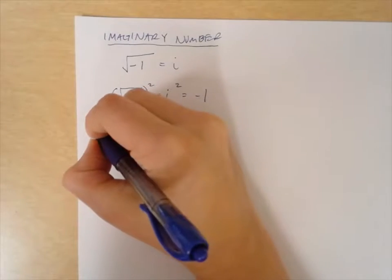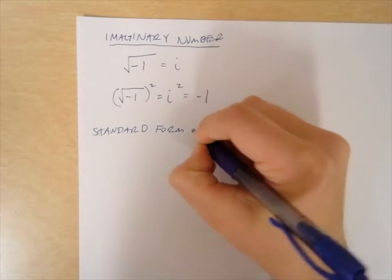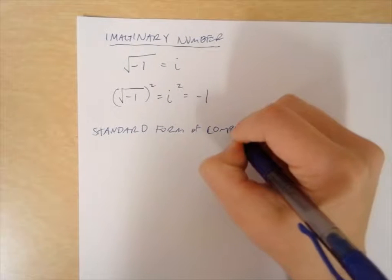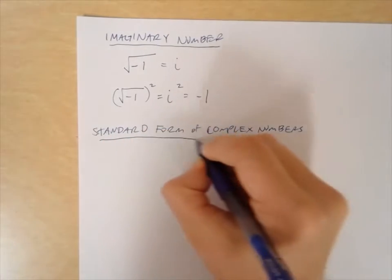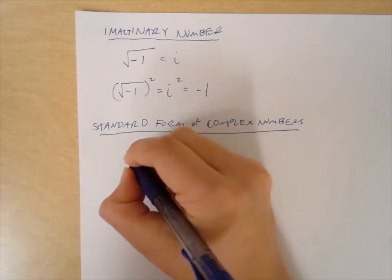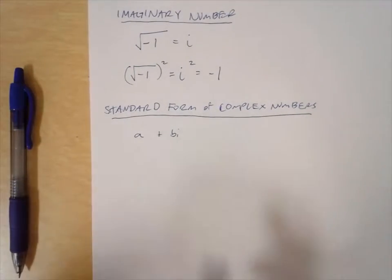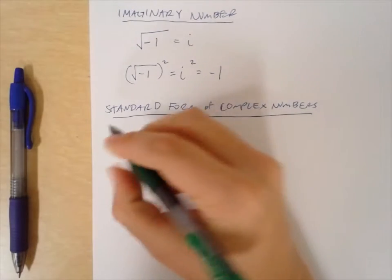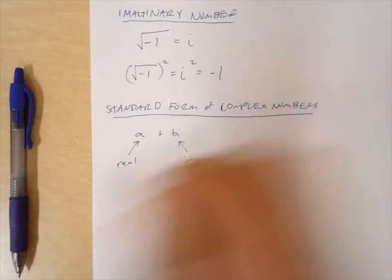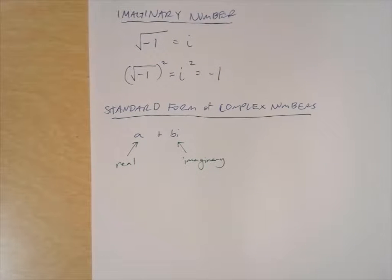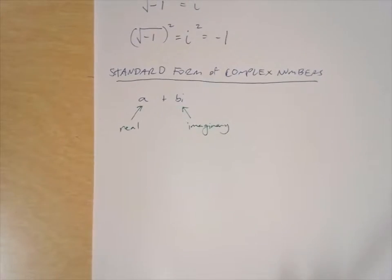Now, let's talk about complex numbers and their standard form. Complex numbers are imaginary numbers with a real number. Complex numbers are some number a plus bi, where a is the real part and bi is the imaginary part. Now, let's talk about some operations using these standard form complex numbers and imaginary numbers.